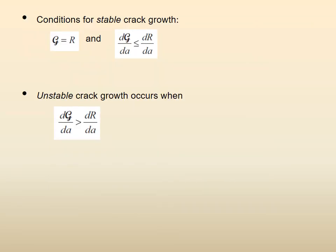Just to remind you: the question was about stability. For stable crack growth, G equals R, and the rate dG/da should be less than or equal to dR/da. If dG/da becomes equal to or greater than dR/da, then we have unstable crack growth. So G = R is one thing, but the main thing you have to find is the rate dG/da.